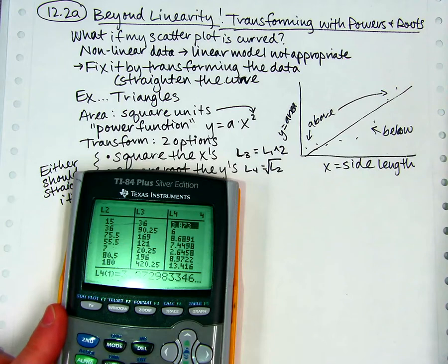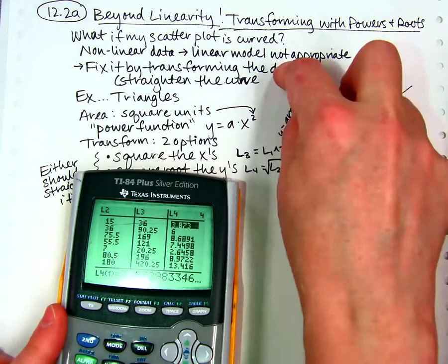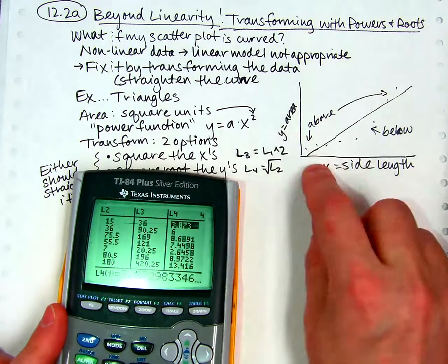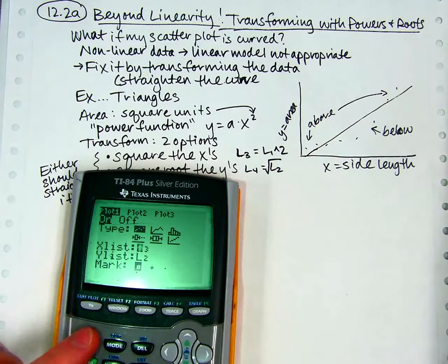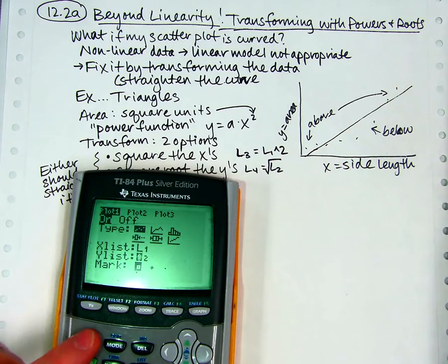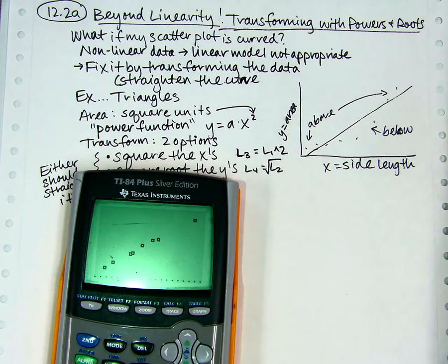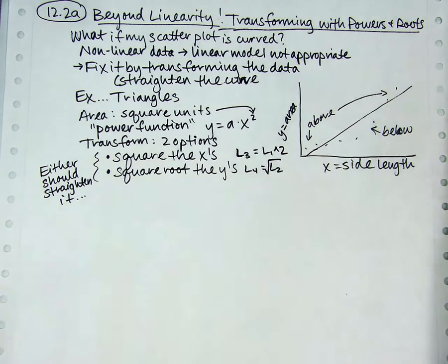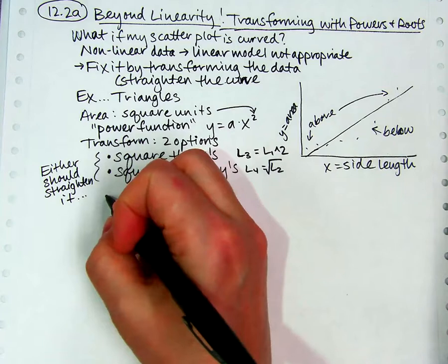And if I do that, then I would want to plot the original x's with the square root of y. So that would be L1 and L4 on my new plot. Let's do that. Plot 1 is now going to be list 1, which is the original x's, list 4, which is the square root of y. And I'm going to zoom 9 again. And that also straightened the curve. So both of those were good solutions to my problem of having a not-so-straight curve, or not-so-straight data set.